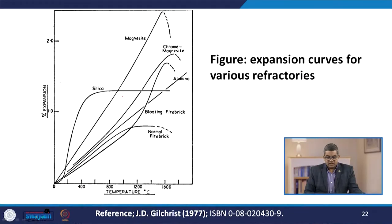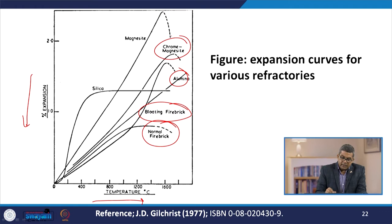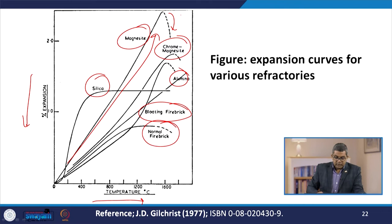This represents the expansion curve for various refractories, plotting percentage of expansion against temperature. Various refractories are represented including thermal bricks, bloating fire bricks, alumina, chrome magnesite, magnesite, and silica. One can observe the sharp expansion curve of magnesite followed by a sharp declination.